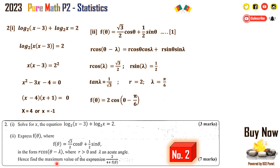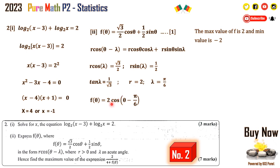The next part says hence find the maximum value of 2 over (4 plus f of theta). 'Hence' means we must use the previous result. The maximum value of the whole expression occurs when the denominator is at its minimum. The minimum of f of theta from 2·cos(theta − something) is negative 2, and the maximum is positive 2, since the maximum value of cos(anything) is 1 and the minimum is negative 1.